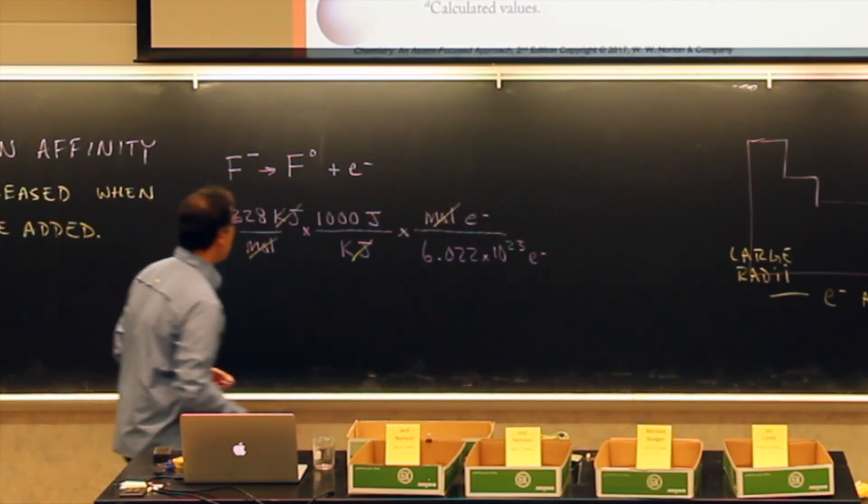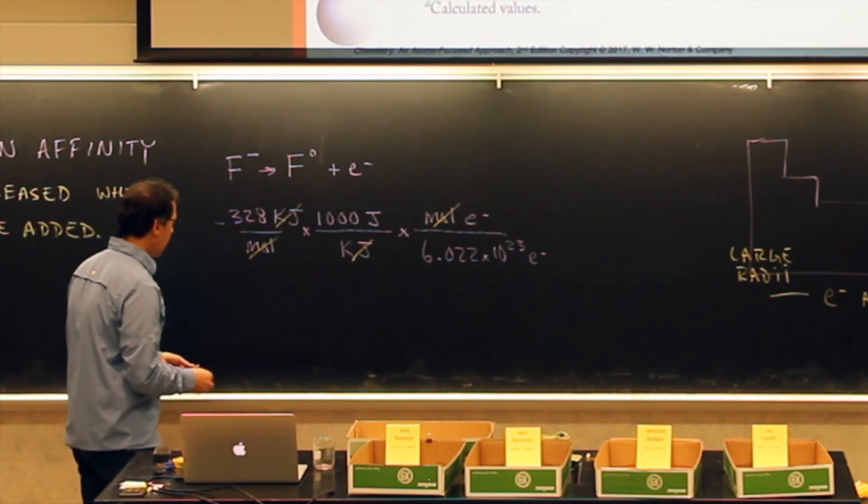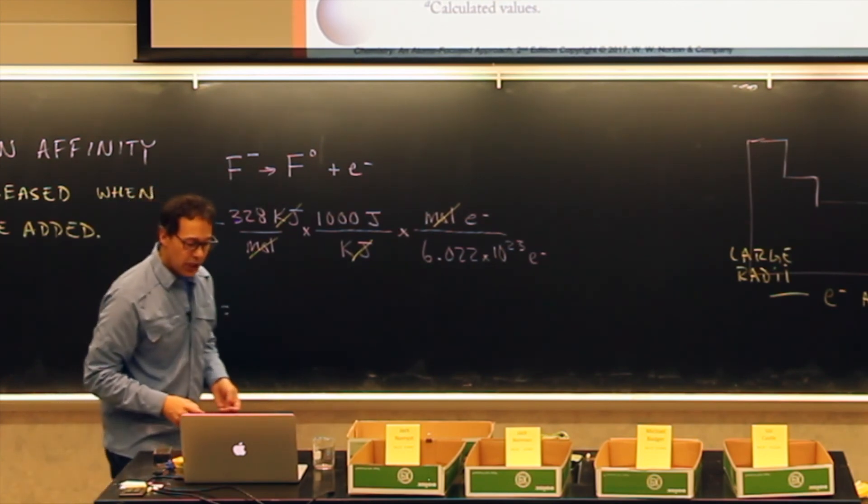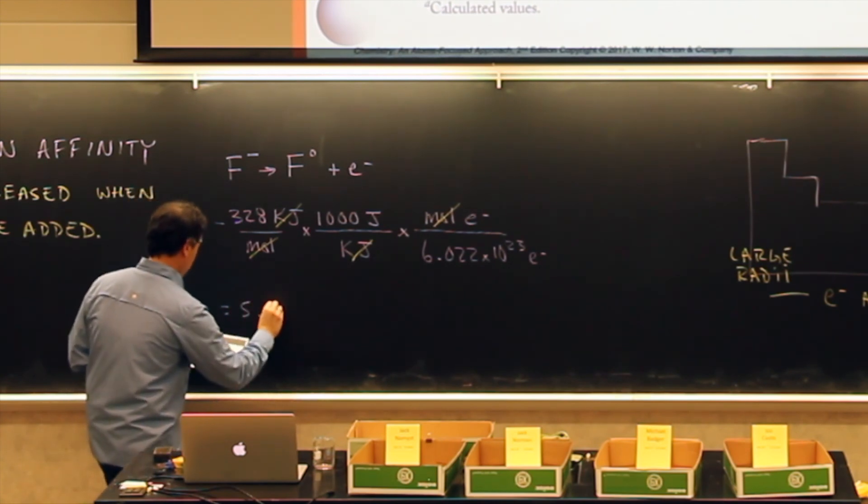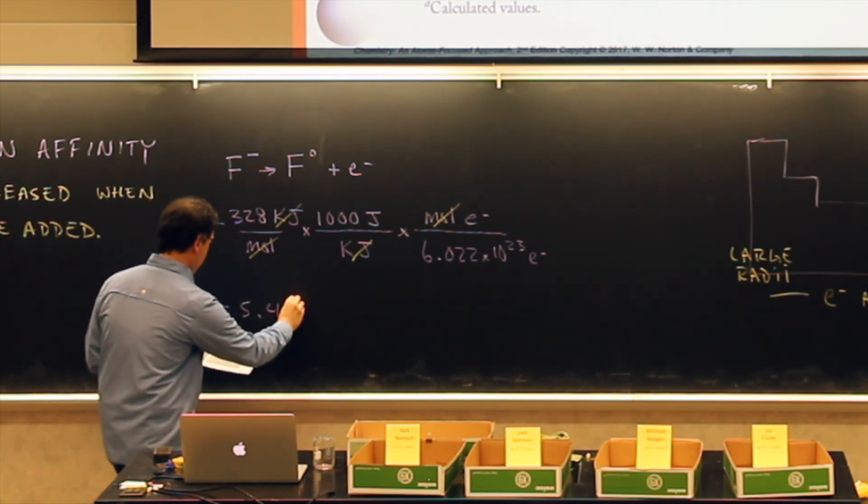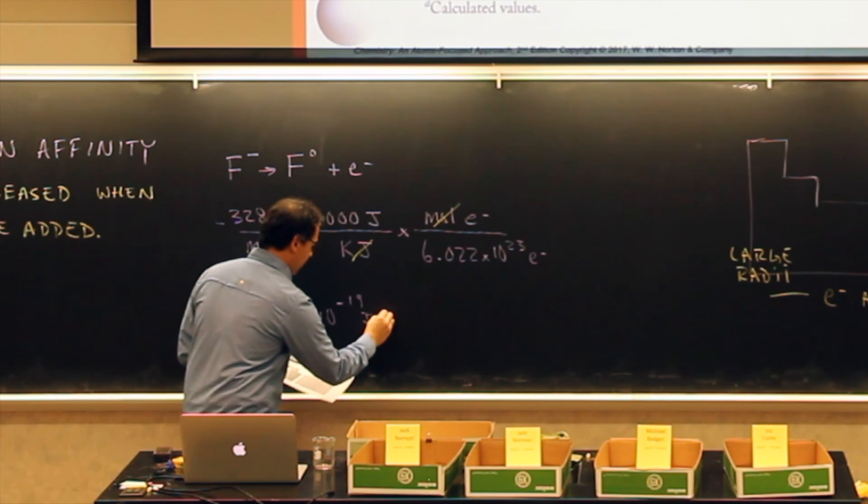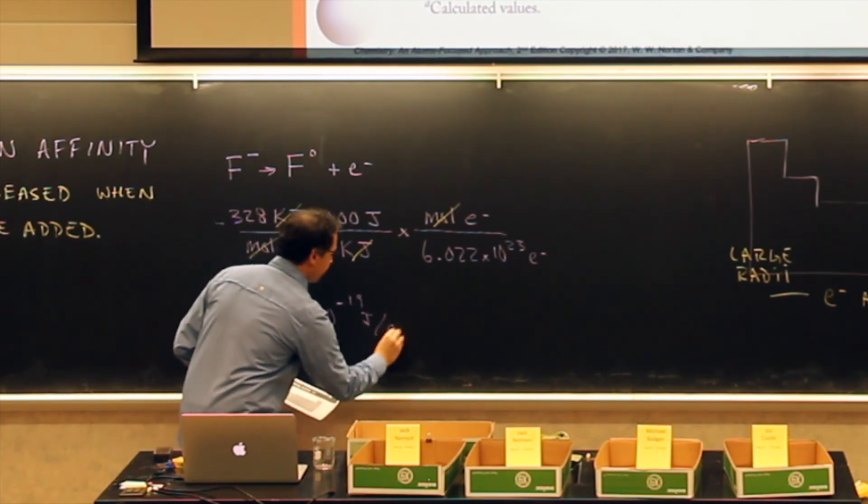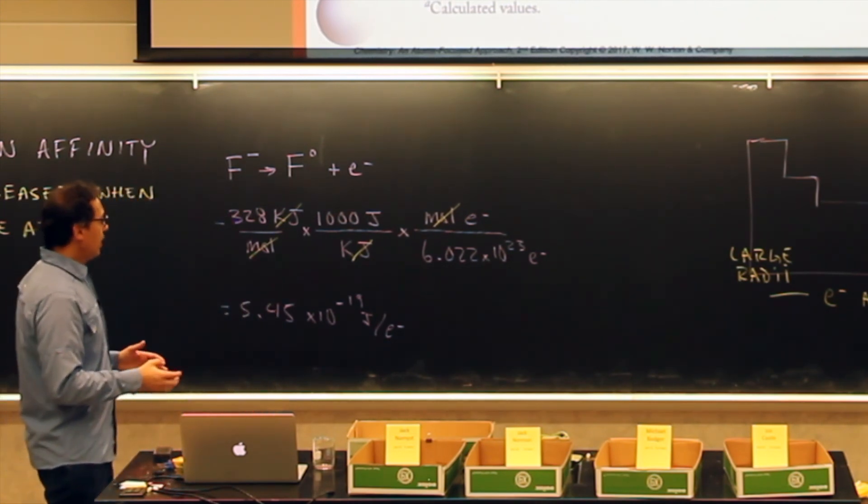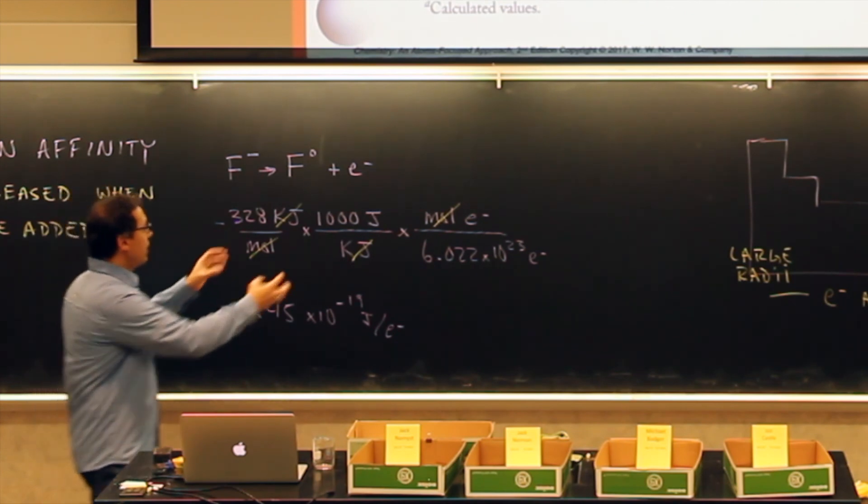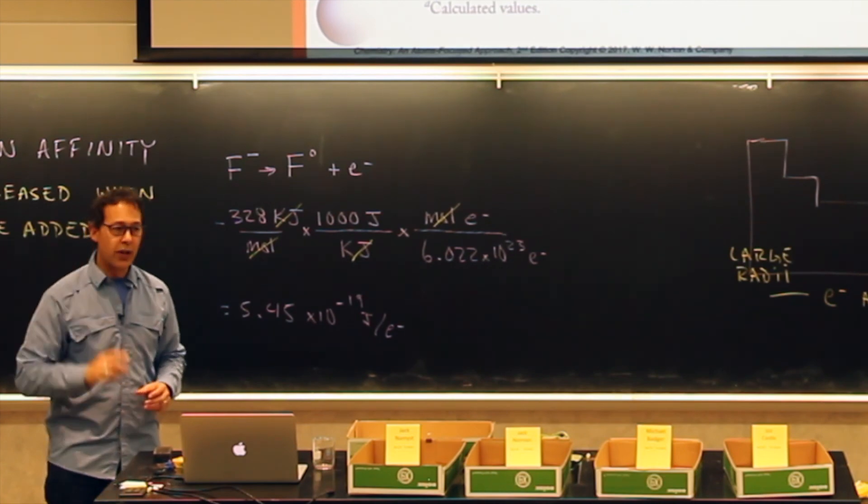When we're done, we should have joules per electron. So the energy here that gets released, when I did my calculation, is 5.45 times 10 to the negative 19th joules per electron. So that's just figuring out how much energy would be required to either remove that electron or to have it added. It's just the change in energy for just one electron.